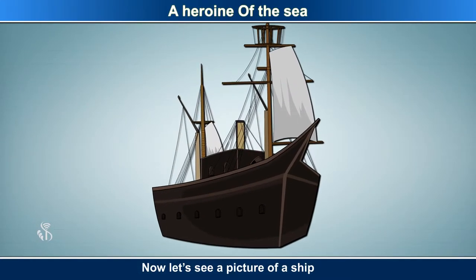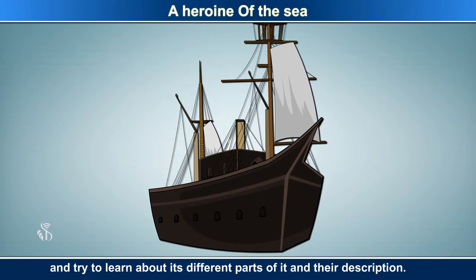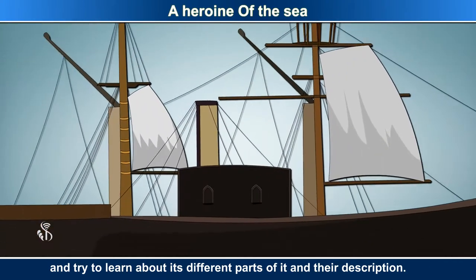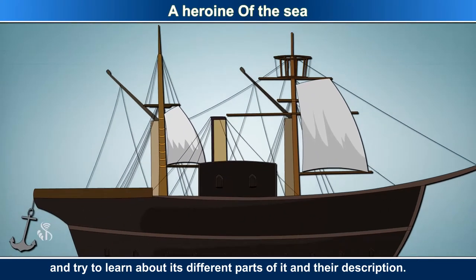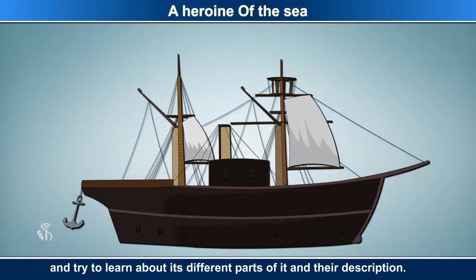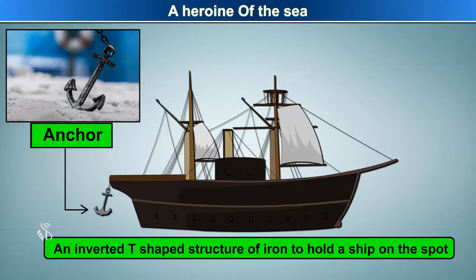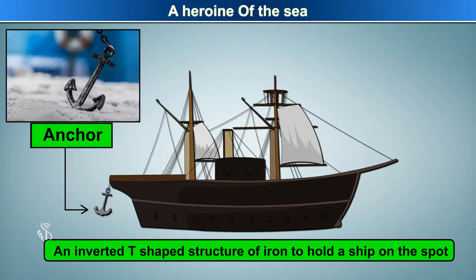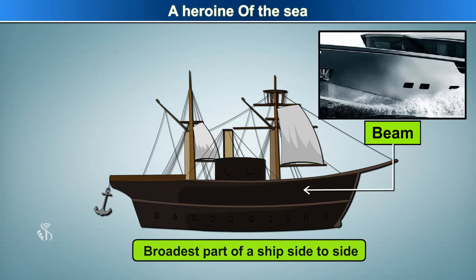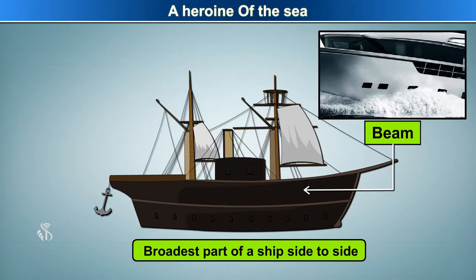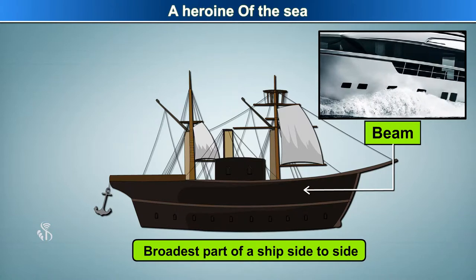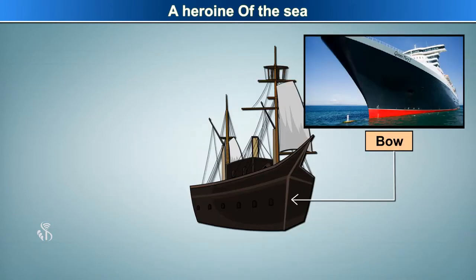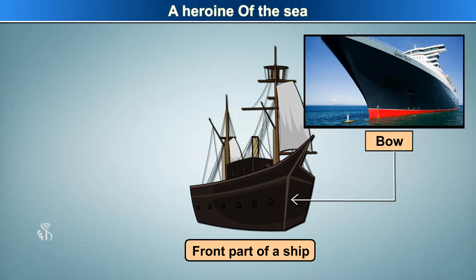Now, let's see a picture of a ship and try to learn about its different parts and their descriptions. Anchor: an inverted T-shaped structure of iron to hold a ship on the spot. Beam: the broadest part of a ship's side-to-side measurement. Bow: the front part of a ship.